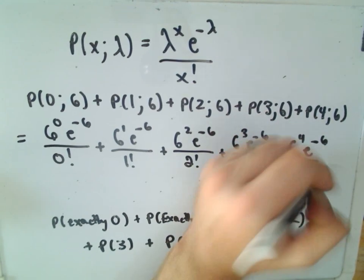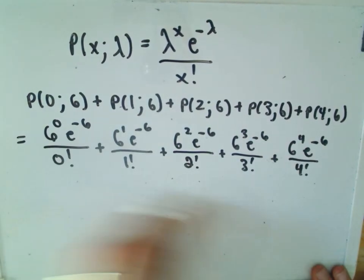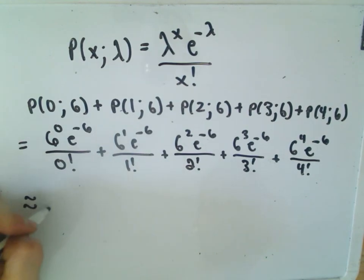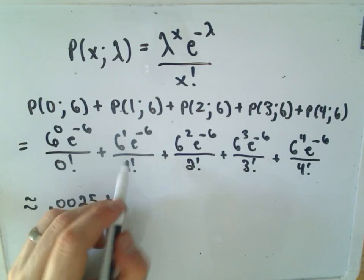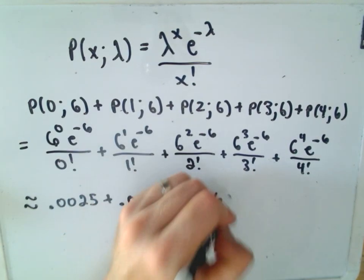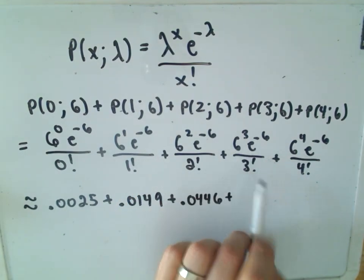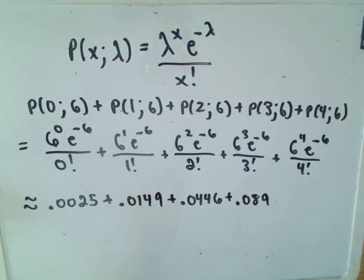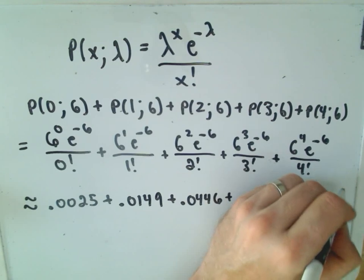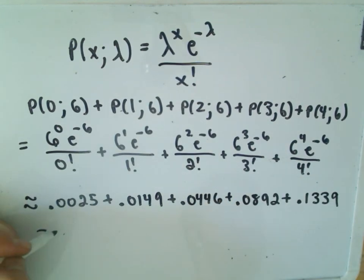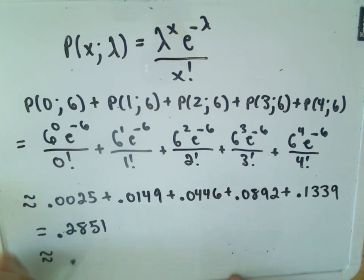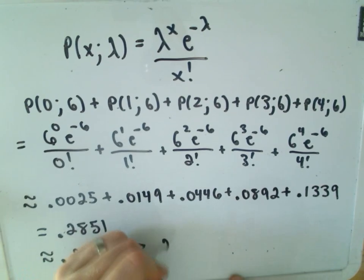Computing each term: the x equals zero term is roughly 0.0025; the x equals one term is roughly 0.0149; x equals two gives approximately 0.0446; six cubed times e to the negative six over three factorial gives roughly 0.0892; and the x equals four term gives roughly 0.1339. Adding all of these up gives approximately 0.2851.